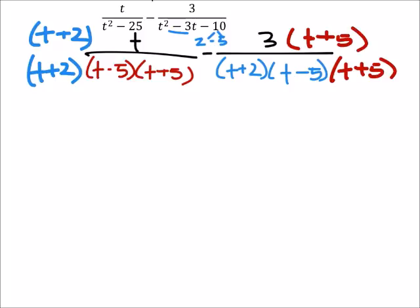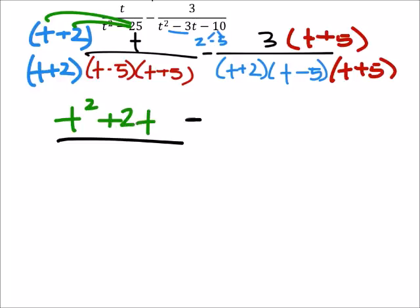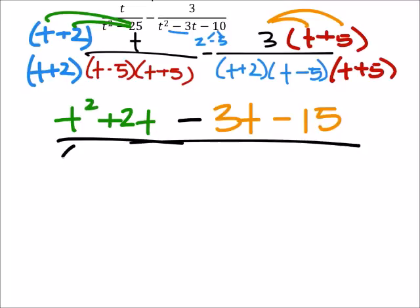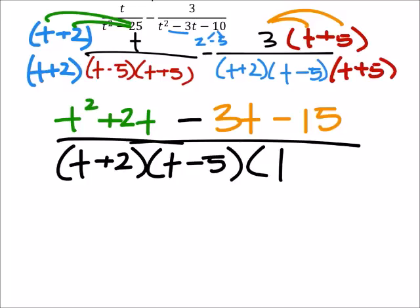This gives us a whole new expression, and I can distribute the t into the parentheses. So that gives me t squared plus 2t. And then I would subtract this from distributing the 3 into the parentheses. It would give me 3t, and this becomes a minus 15 because we were subtracting it. And I have a common denominator of t plus 2, t minus 5, and t plus 5.